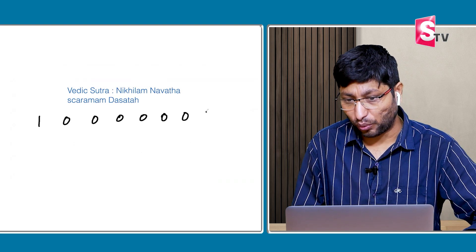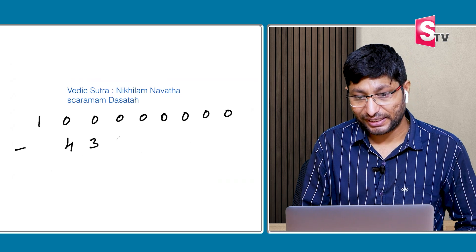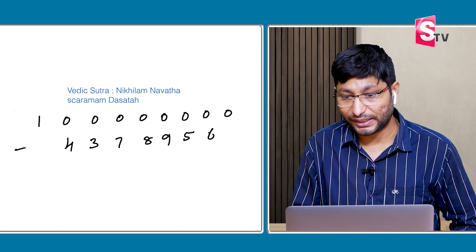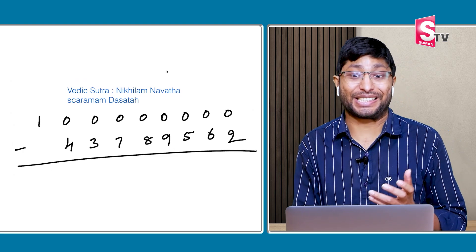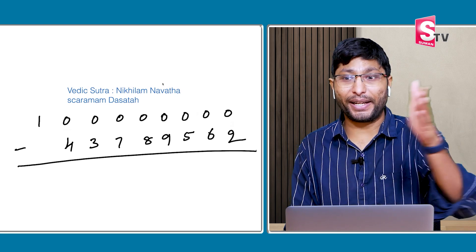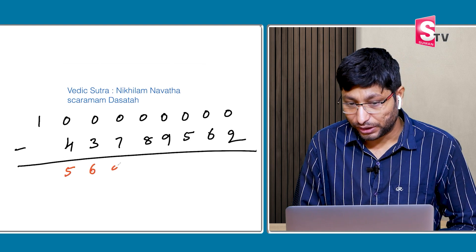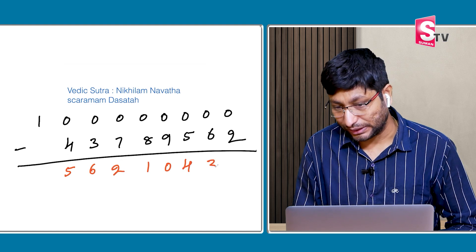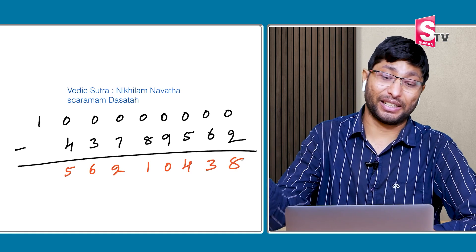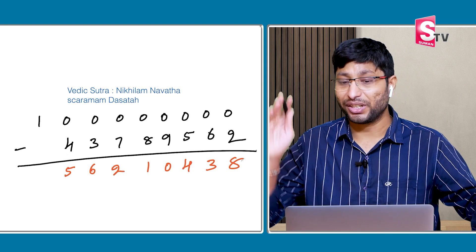Here is a problem: 10 crores minus 4,37,89,456 — let's say. Solving all different large digits in one step is not easy. If you understand the difference between the way I solve and the way you solve using conventional methods — this is the difference between conventional maths and Vedic Maths. Using all from 9, last from 10: 9 minus 4 is 5, then 6, 2, 1, 0, 4, 3, 8. Answer directly written.